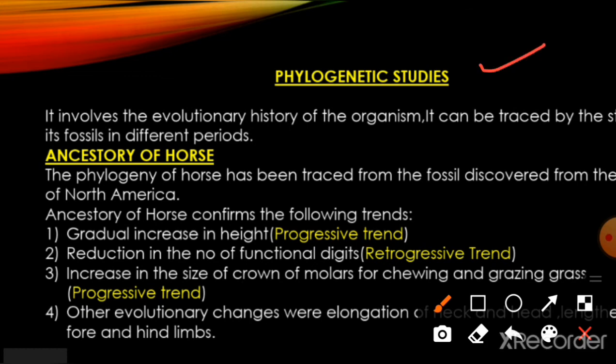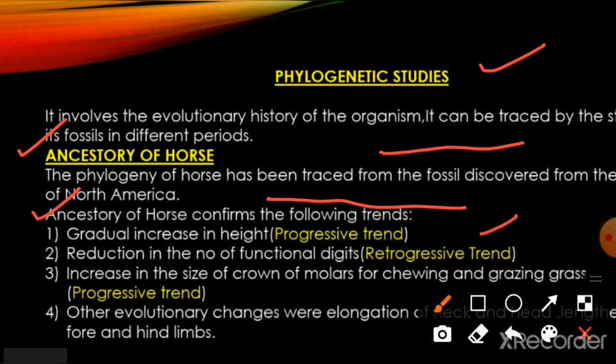Next, we have phylogenetic studies. Phylogeny is the evolutionary history of an organism, which we can trace with the help of fossils. An example is the ancestry of the horse, whose phylogeny is traced from fossils discovered from the tertiary rocks in North America. When we study horse ancestry, we see both progressive trends — increase in size — and retrogressive trends — reduction of certain structures.